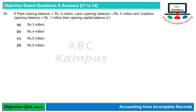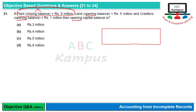Question 31: If plant has closing balance Rs. 8 million, land has opening balance Rs. 5 million, creditors have opening balance Rs. 1 million, then opening capital is? Opening capital के लिए सिर्फ opening balance वाले assets और liabilities लेने होंगे। Opening assets: land = Rs. 5 million; opening liabilities: creditors = Rs. 1 million। Net = Rs. 5M − Rs. 1M = Rs. 4 million equity। Option B is correct।